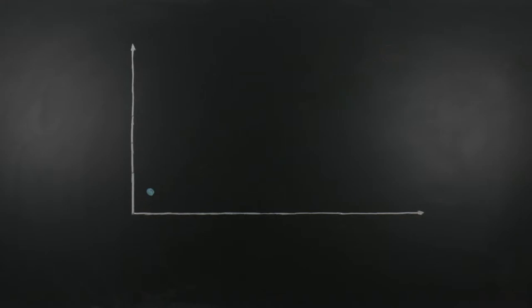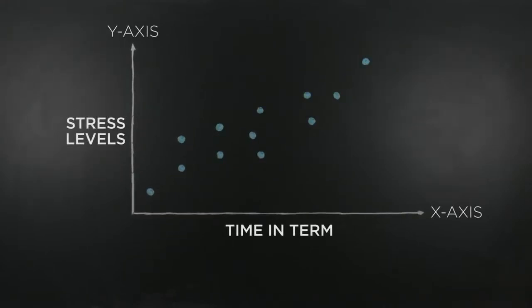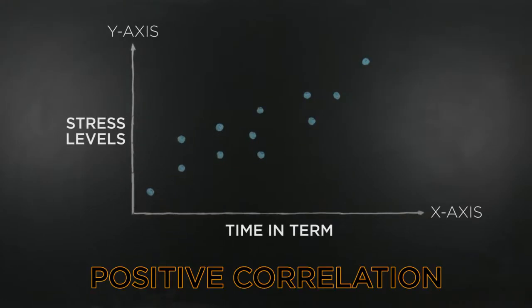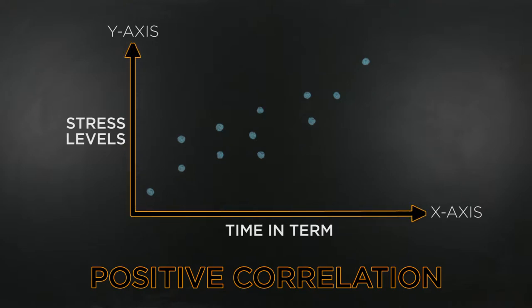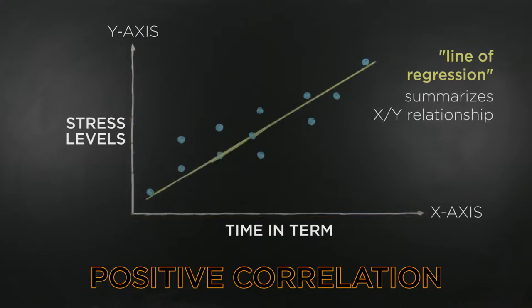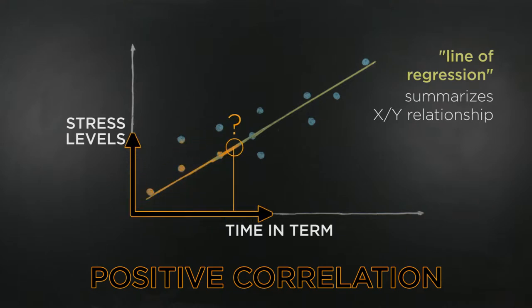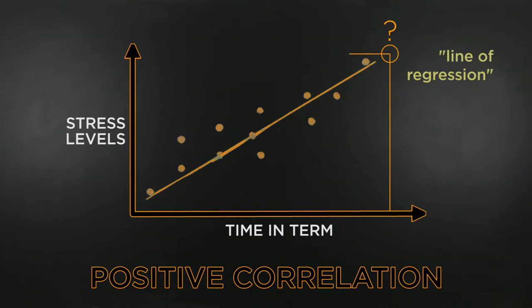First, if your graph looks like this, then you have a positive correlation. As x increases, y also increases. The line of regression, which summarizes the relationship between x and y, looks like this. And from the data in this graph, we can predict that the further along a student is in the term, the more stressed they are.